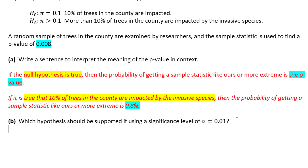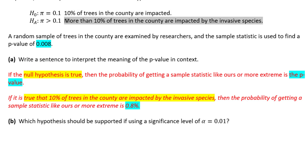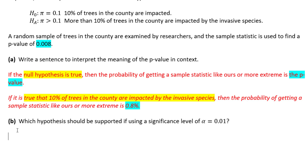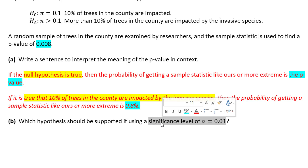Next, we're asked to make a conclusion about which hypothesis we should support. To write a conclusion, you should either be supporting the null — saying it's plausible that 10% of the trees in the county are impacted — or you should be supporting the alternative hypothesis, that more than 10% of the trees in the county are impacted. To make that decision, you need to compare your p-value to your significance level alpha. If your p-value is smaller than alpha, then you reject the null and support the alternative. If your p-value is bigger than alpha, then you say the null is plausible.